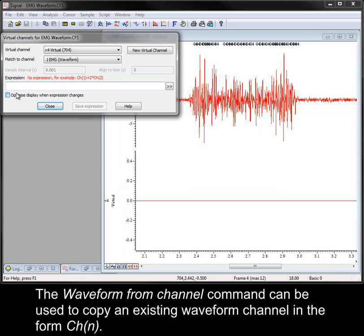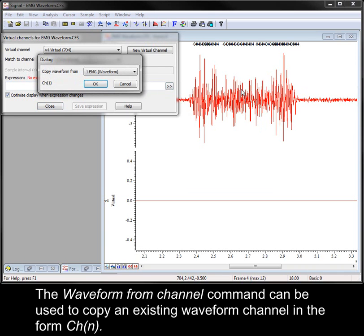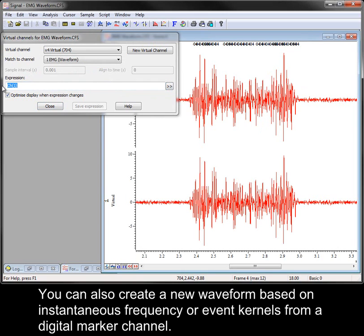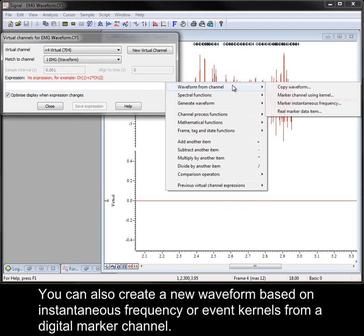The waveform from channel command can be used to copy an existing waveform channel in the form chn. You can also create new waveforms based on instantaneous frequency or event kernels from a digital marker channel.